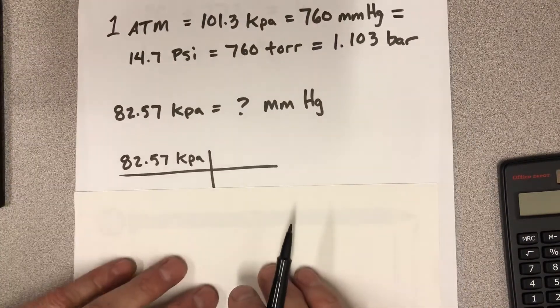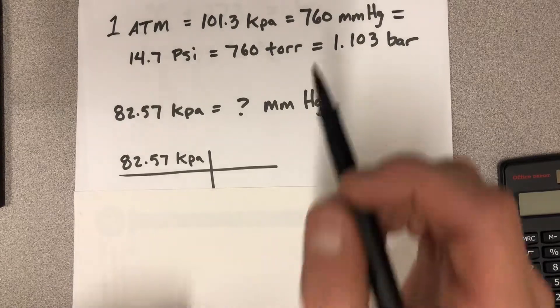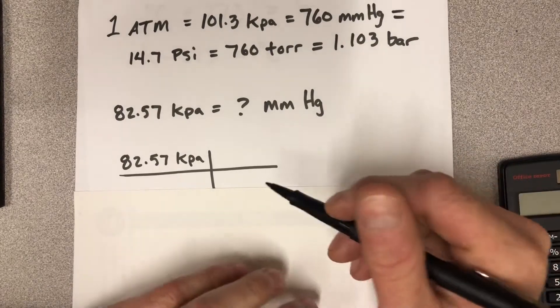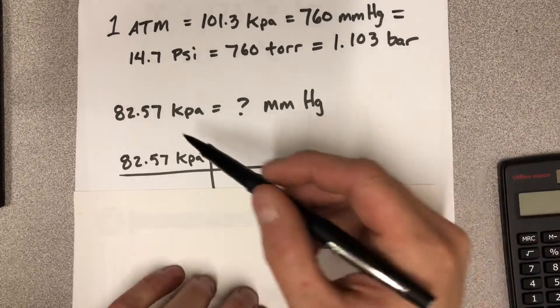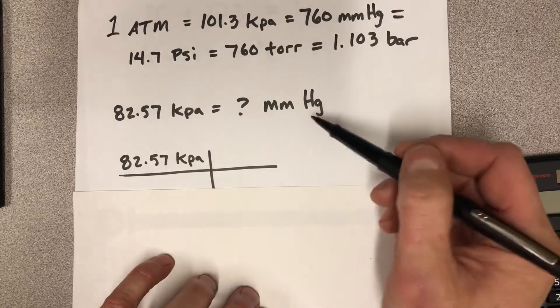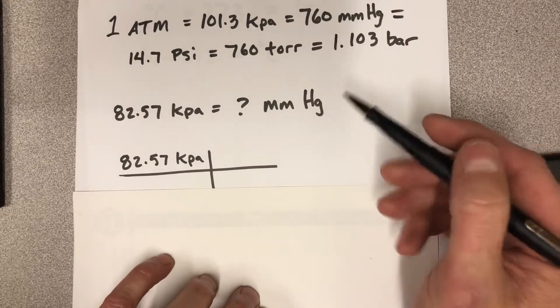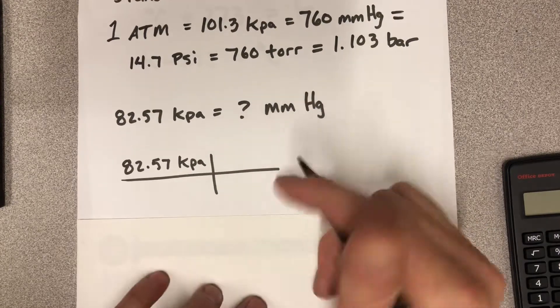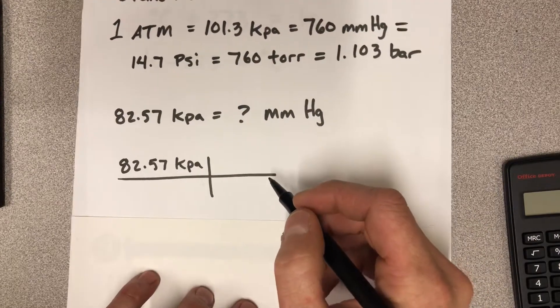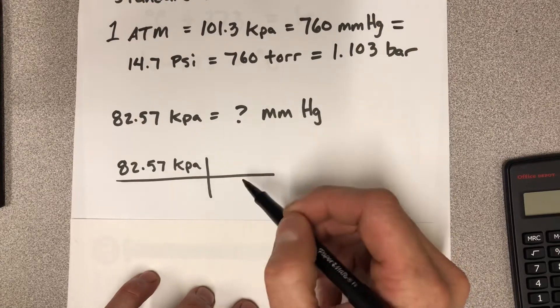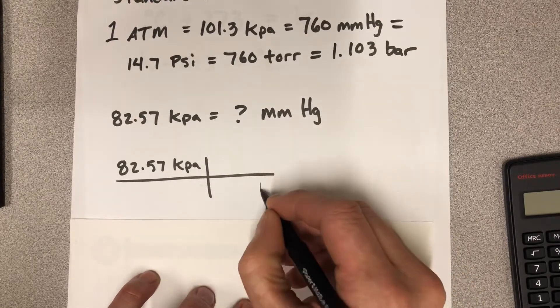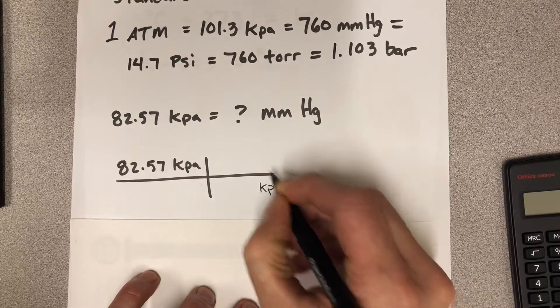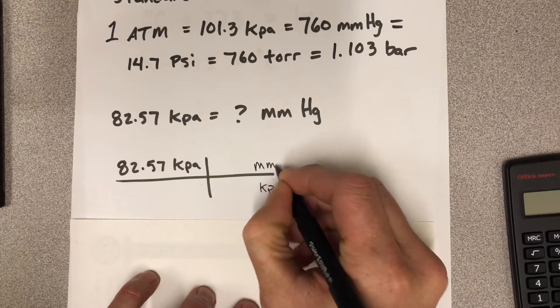So the way we do that is just with simple dimensional analysis. And so like if you had a problem where you needed to convert kilopascals into millimeters of mercury, you would just use simple dimensional analysis. And then over here, this is where you put the conversion factor for these two pressure units.